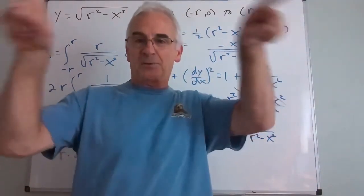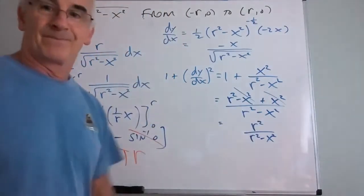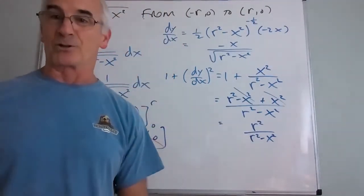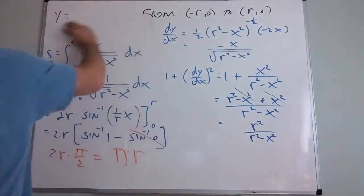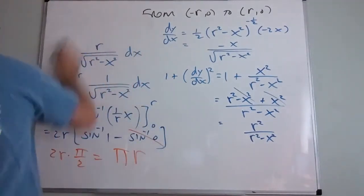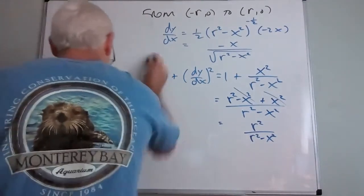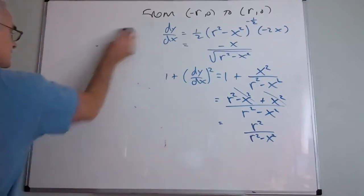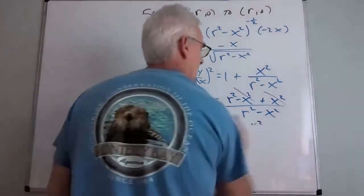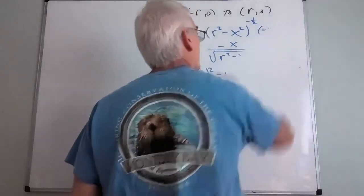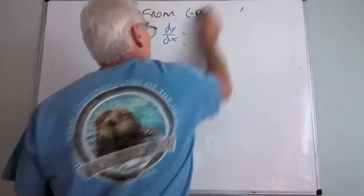Setting up the integral to find arc length is fairly simple; being able to actually integrate depends on the function. The cusp (y = x^(2/3)) is one of the few you can do; the semicircle is another. Now let's move on to surface areas — the gnarliest of all the integrations. Let's do some geometric review first.